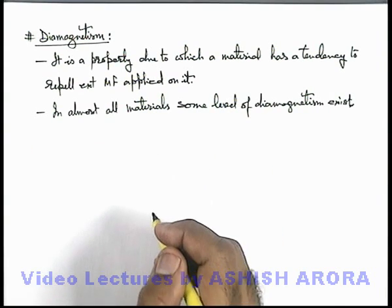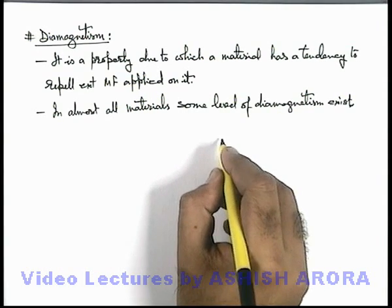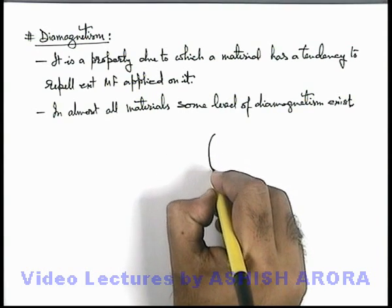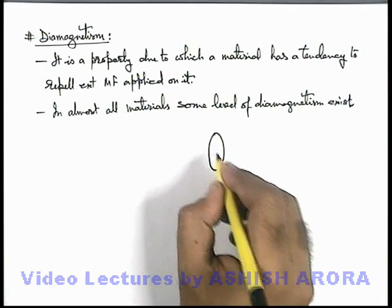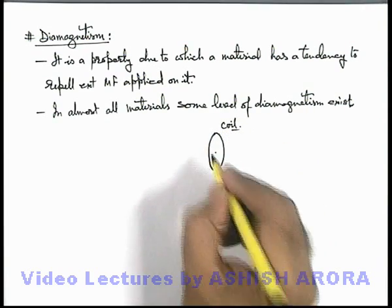To understand diamagnetism, let's consider an example. This illustration will help you to understand the diamagnetic properties. Say we are given a circular coil which is not having any current in it.